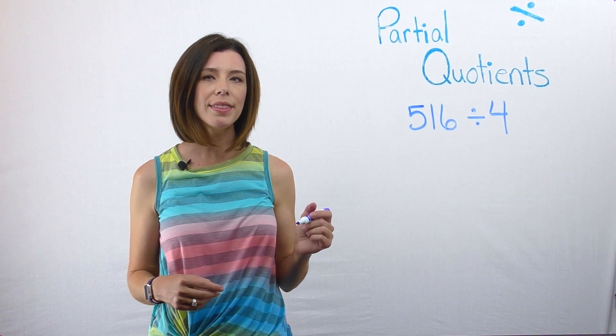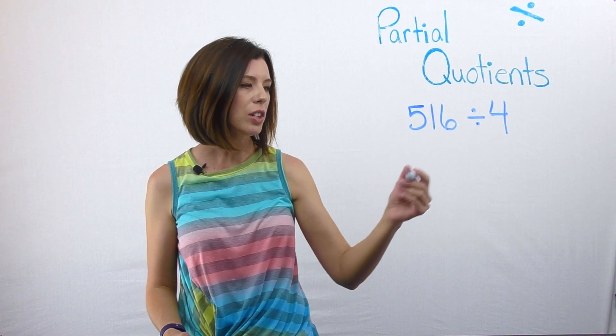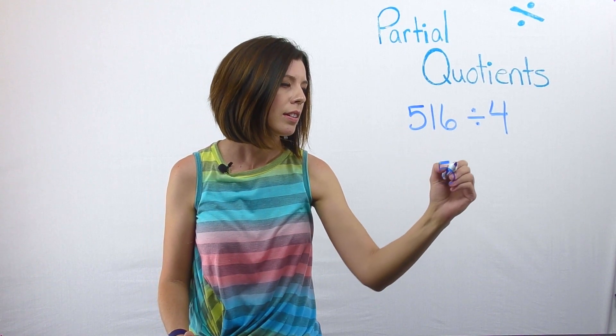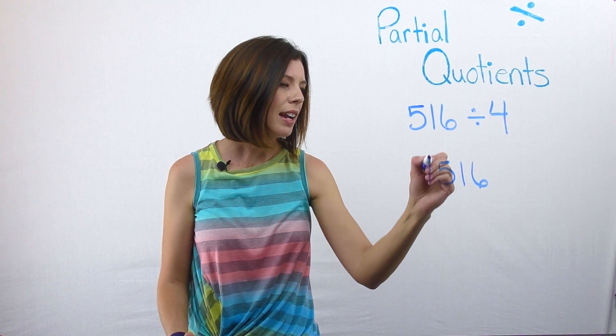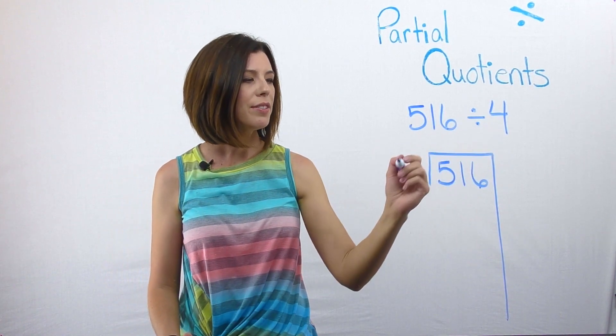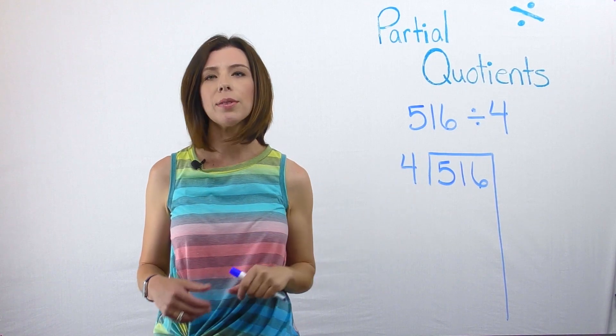You're going to notice that when I write this, I'm going to write it a little bit differently than you're used to seeing. So I'm going to take the dividend and put it inside of what looks like a giant number 7 and then put my divisor on the outside.